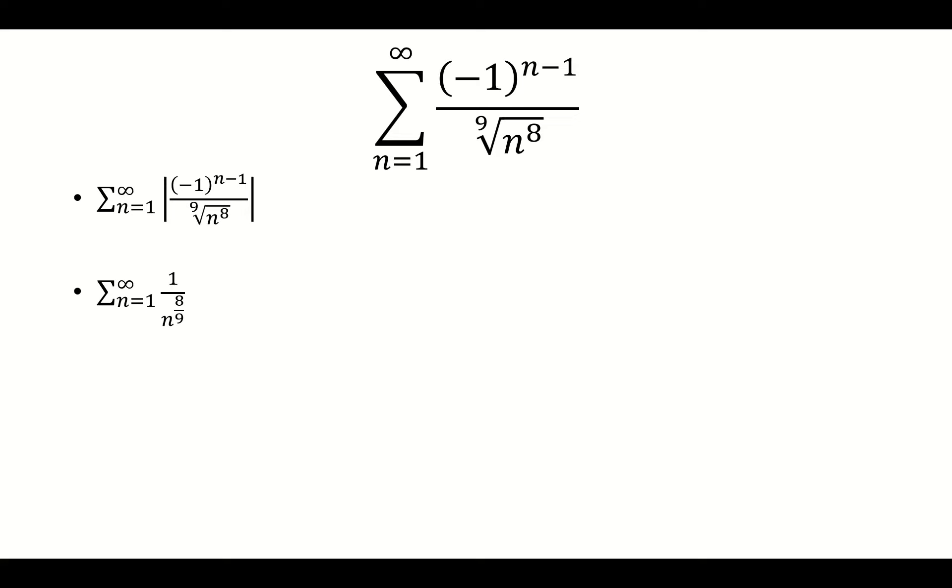And so now we look at 1 over n to the 8 over 9th power, which we compare to the p-test, or the p-series. We see that p is 8 over 9, which is less than or equal to 1. This means it diverges, so therefore it doesn't converge absolutely.